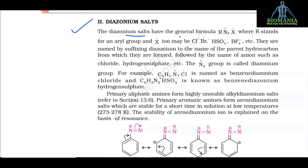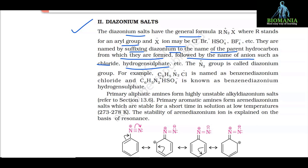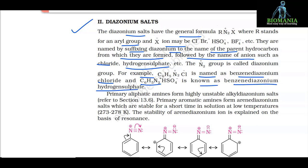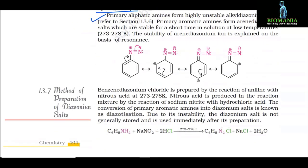13.7 Diazonium Salts. Diazonium salts have the general formula ArN2+X⁻ where Ar stands for an aryl group and X⁻ may be chloride, bromide, HSO4⁻, BF4⁻ etc. They are named by suffixing 'diazonium' to the name of the parent hydrocarbon, followed by the name of the anion. For example, C6H5N2+Cl⁻ is benzene diazonium chloride and C6H5N2+HSO4⁻ is benzene diazonium hydrogen sulfate. Primary aliphatic amines form highly unstable alkyldiazonium salts. Primary aromatic amines form aryldiazonium salts which are stable for a short time in solution at low temperatures. The stability of aryldiazonium ions is explained on the basis of resonance.